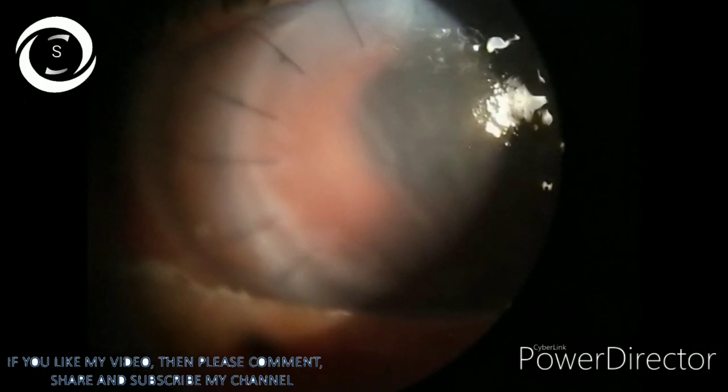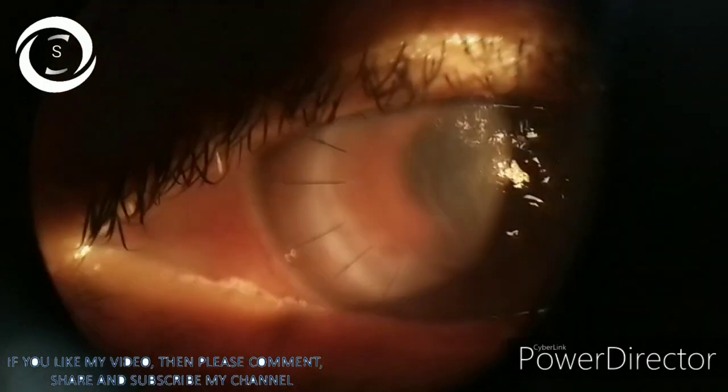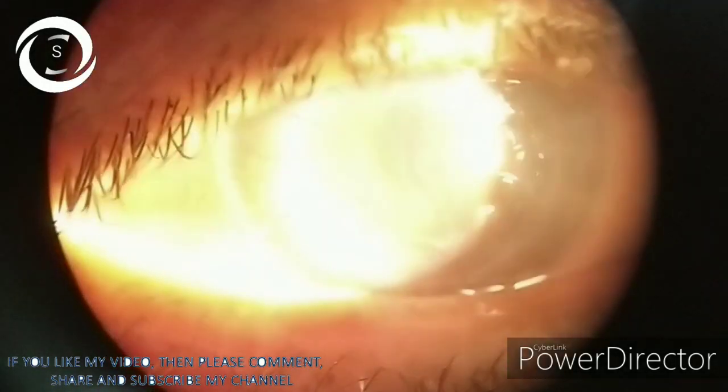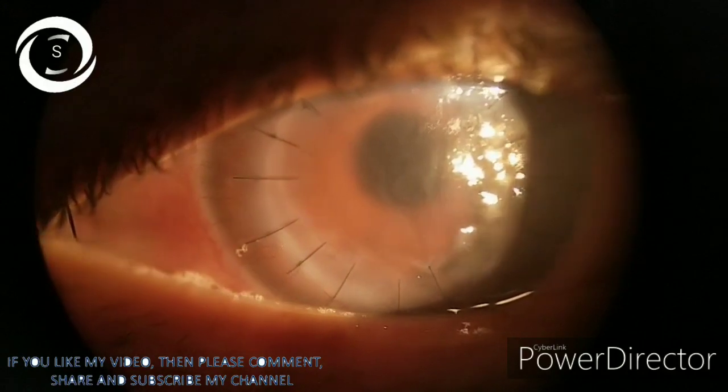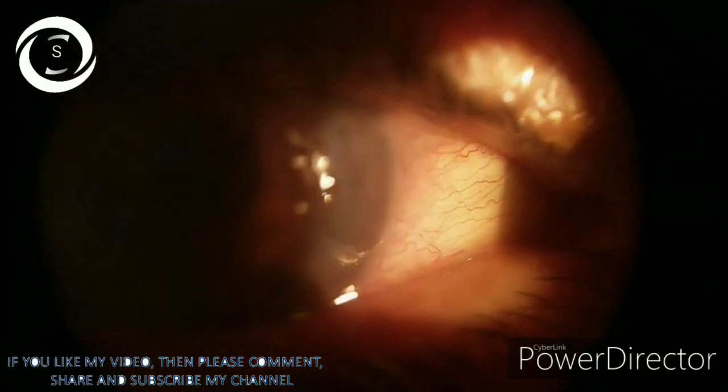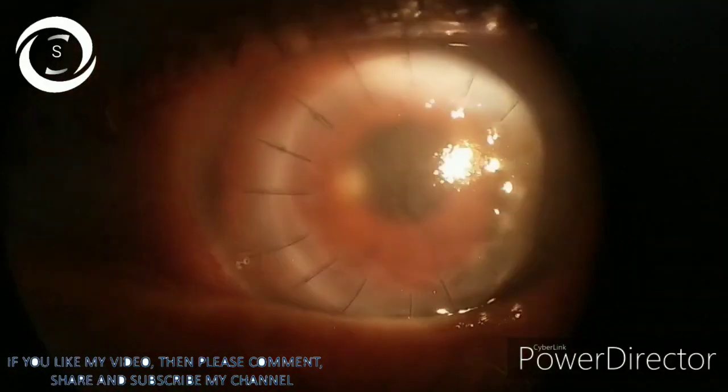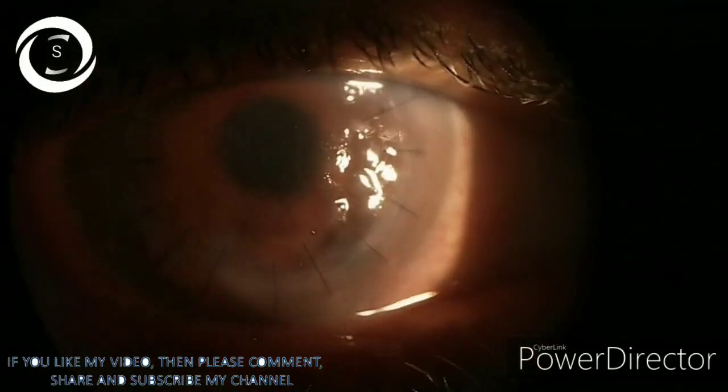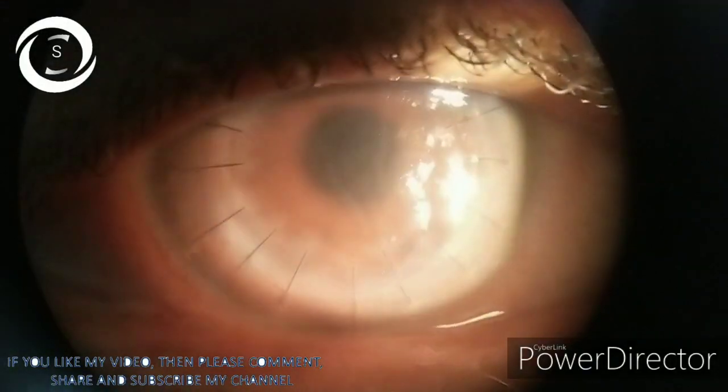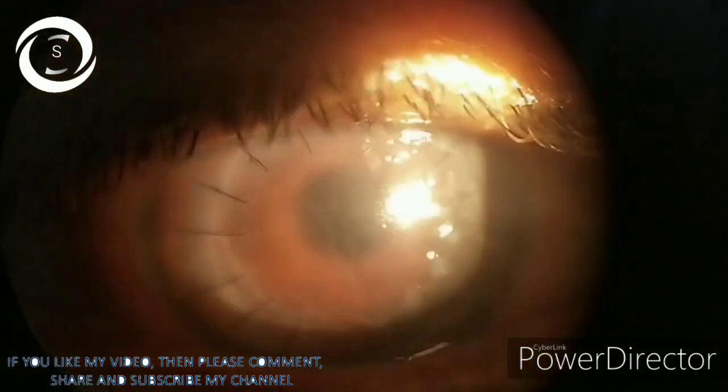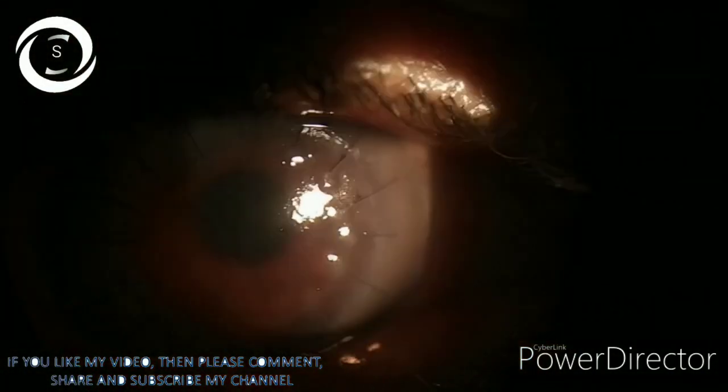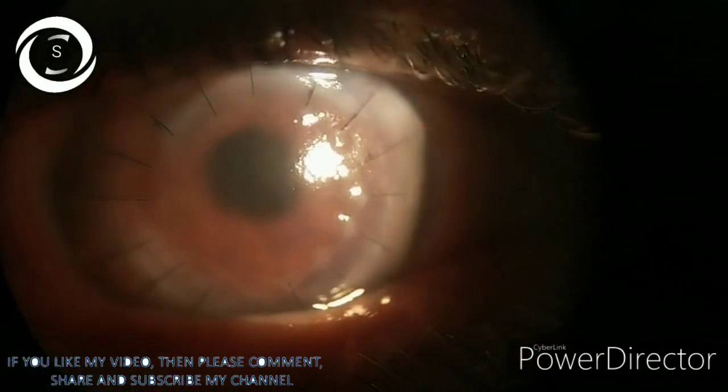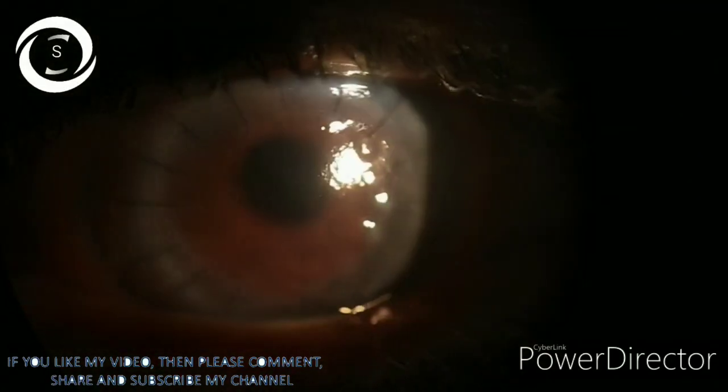Late corneal graft rejection is one of the most common phenomena seen post-keratoplasty, and it is more common after full-thickness keratoplasty than lamellar keratoplasty. If you look closely, you can see Descemet striations, corneal edema, marked edema at the host-graft interface, and corneal haze.